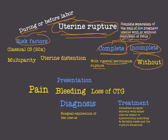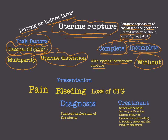The most important risk factor for uterine rupture is classical caesarean section, which is 20 times more prone to rupture than a normal caesarean section. Multiparity is also a risk factor. Uterine distension is also very important, as it makes the uterus more vulnerable to rupture.